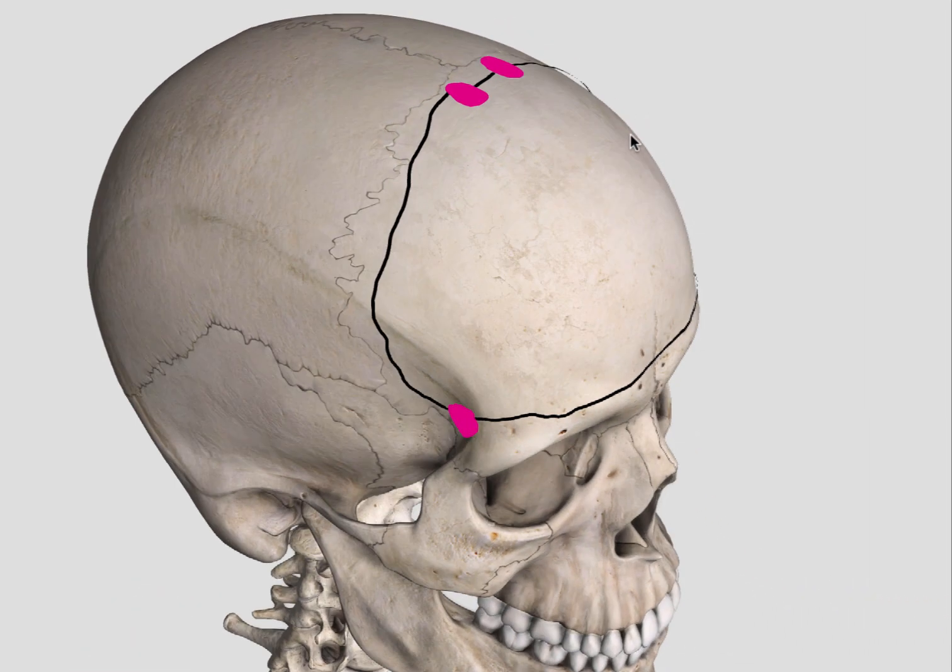The reason I would put the burr holes just in front of the coronal suture is that you'll avoid going through the suture itself. If you put the burr hole back you'll have to cross the coronal suture, which is fine, but if you avoid the suture—because these are the areas where the dura is most adherent to the bone—it will make your life much easier.